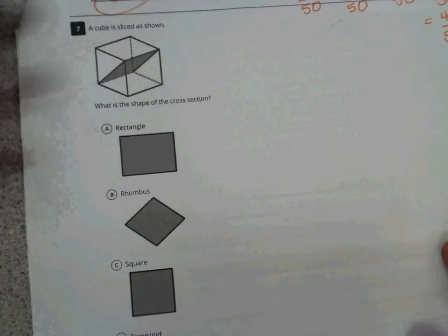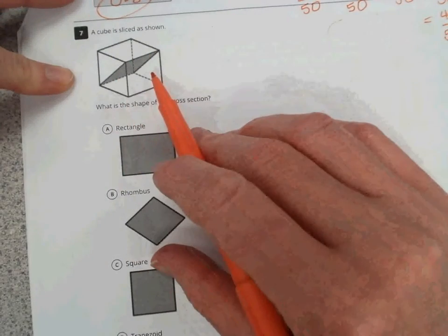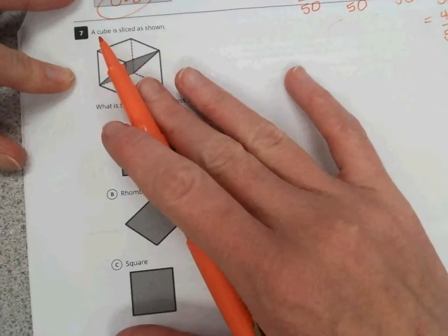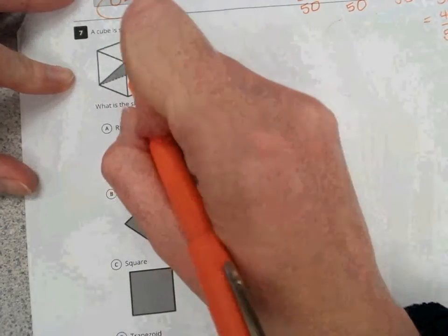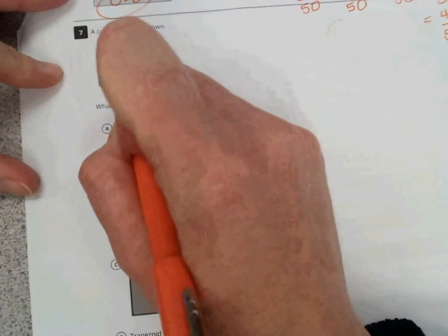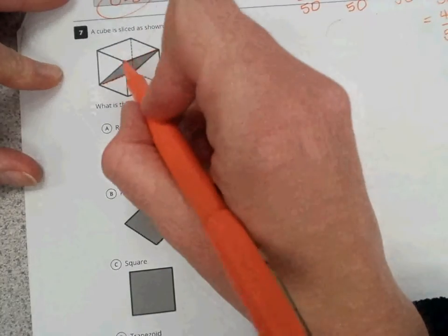Question 7, talking about a cube. So all sides are squares, all six sides are squares. And we have it sliced as shown, from this upper diagonal to this lower back diagonal or edge.